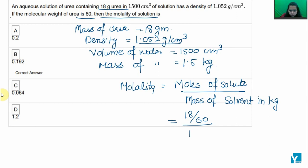And the mass of solvent is 1.5 kilograms, so it would be 0.3 divided by 1.5, that is 0.2 molal, which is option A. So option A is the right answer.